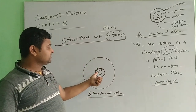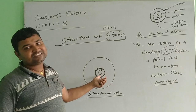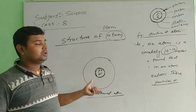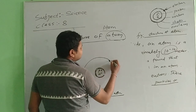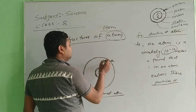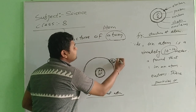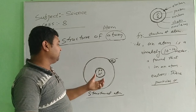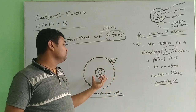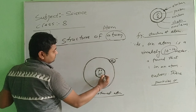Proton is a positive charge particle which is found inside the nucleus. Another is neutron — neutron is a neutral particle, it does not have any charge. The electron has a negative charge and revolves at high speed around the nucleus. The electron has a negative charge and the proton has a positive charge — both are neutralized by each other, so that the atom overall has no charge.